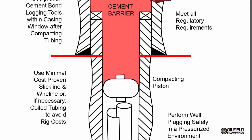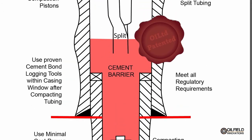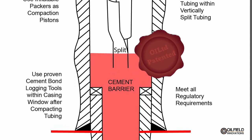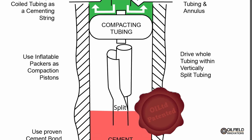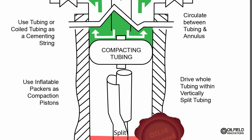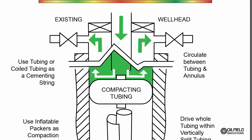Compacting tubing provides a window that allows through-tubing cement bond logging of the casing prior to placing a cement barrier on top of support formed by the compaction piston. It's therefore possible to use slick line and wire line, or in the worst cases coil tubing, to avoid rig costs and meet all regulatory requirements within a pressurized environment in a safer and more environmentally friendly manner. Oil and gas wells have kilometers or miles of tubing that can be compacted, so multiple compactions and multiple abandonment plugs can be set within the well to fully abandon the well using the existing tubing and existing well head.